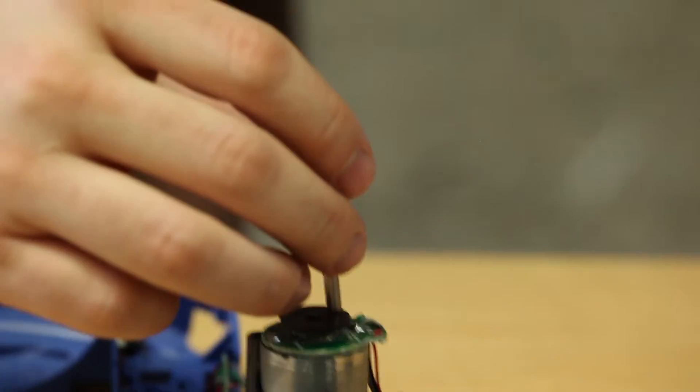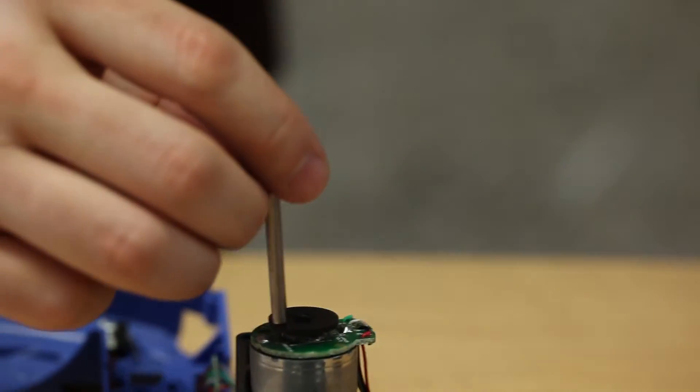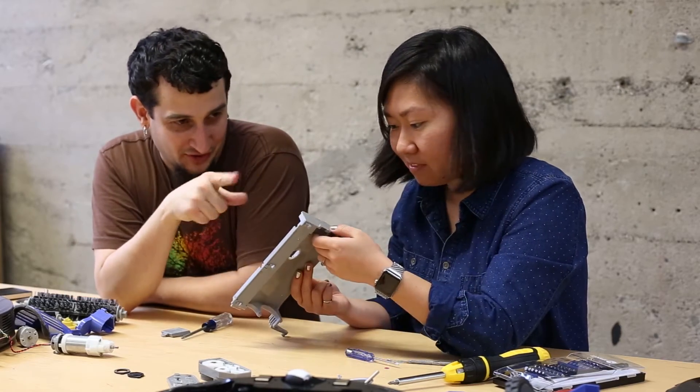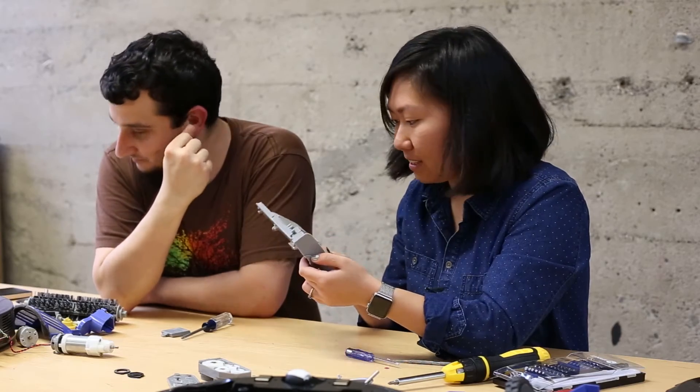So we saw a lot of optical encoders in our teardowns and first time I think we've seen a magnetic one. Yeah, they have a lot of large objectionable components. Yeah, they like sweat the details, you know.